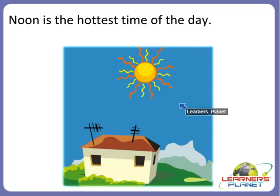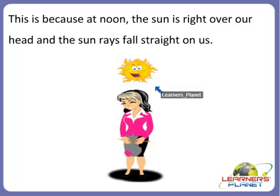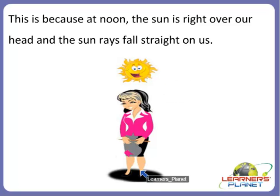But what about noon? Noon is the hottest time of the day. Mornings and evenings are cooler, but noon is the hottest time of the day. This is because at noon the sun is right over our head and the sun rays fall straight on us. So noon is the hottest time of the day.